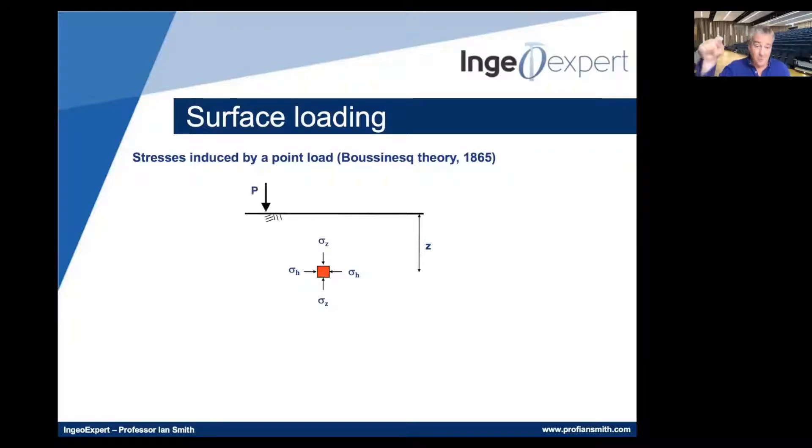If we apply a point load at some distance away from vertically above that element of soil, and we apply the point load with intensity P to the surface of the soil, then what actually happens is that there is an effect, a component of stress caused by P that we must add on to the original sigma Z value. We call that component a stress increment. It's an increase in stress due to the applied loading.